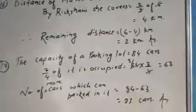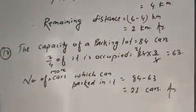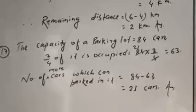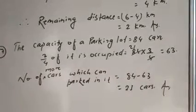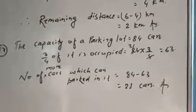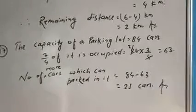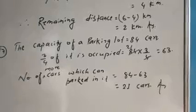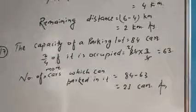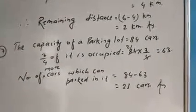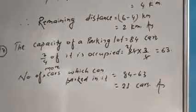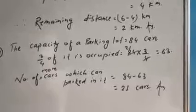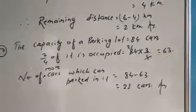Question number 17: The capacity of a parking lot is 84 cars. At a particular time, 3 by 4 of the parking lot is occupied. How many more cars can be parked at that time?